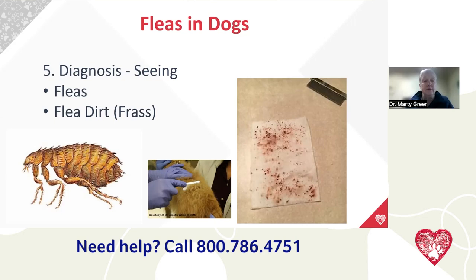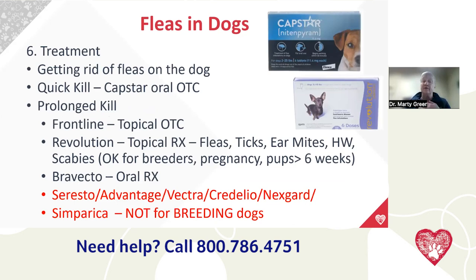To get rid of fleas on the dog, the fastest kill is Capstar — an oral product containing nitenpyram. Within an hour, fleas start dropping off the dog, but it only lasts about 24 hours. It does a great job knocking flea numbers down, but it's not going to give you the prolonged kill needed to interrupt the flea life cycle. Unless you're retreating every three to four weeks, the fleas will keep hatching out again and again.